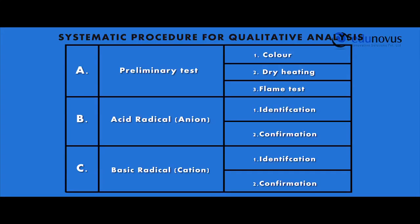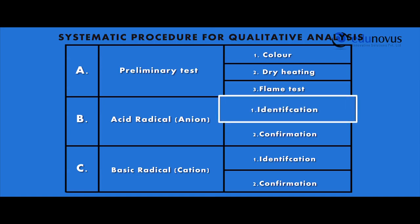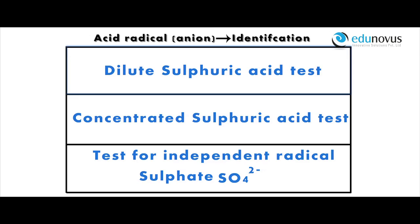Acid radicals, that is anions: first we identify the acid radical in the given salt, and then we confirm it with the corresponding confirmation test. For identification of acid radicals, we have three tests: diluted H₂SO₄ test, concentrated H₂SO₄ test, and tests for independent radicals. Some anions react with diluted H₂SO₄, others with concentrated H₂SO₄, and a few react with neither, for which we have individual tests. Let us identify the acid radicals by performing the tests in order.